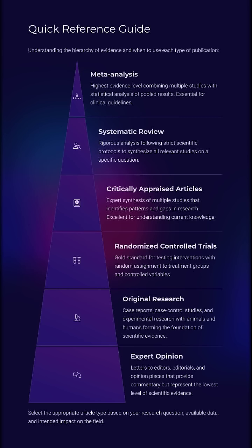Let's break down the hierarchy, from opinions to pooled power. The hierarchy of scientific evidence progresses from expert opinions to case reports, followed by original research, randomized controlled trials (RCTs), systematic reviews, and culminates at the highest level with meta-analyses.